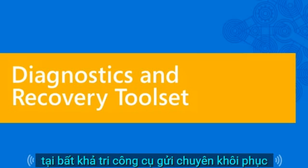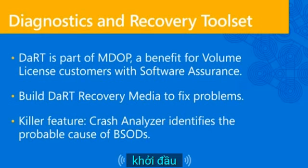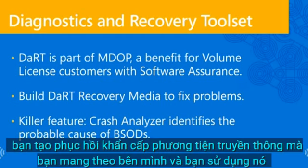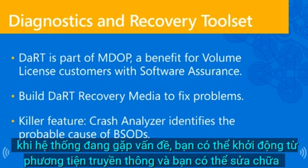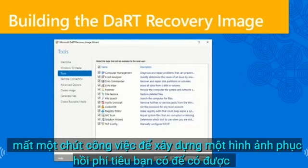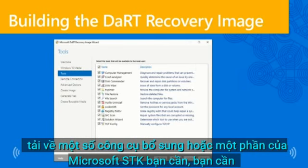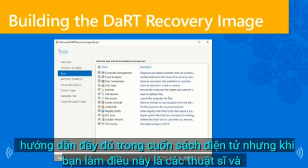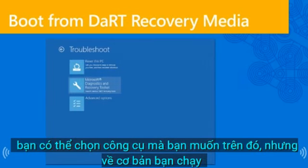Now let's look at the Diagnostics and Recovery Toolset — DART. As mentioned, it's part of MDOP. With DART, you create emergency recovery media, carry it with you, and use it when a system is having problems. You boot from that media and can fix problems with the system — really like having a toolkit in your back pocket. It takes a bit of work to build a DART recovery image; you need to download some extra tools from the Microsoft SDK including the Windows Debugger tools.